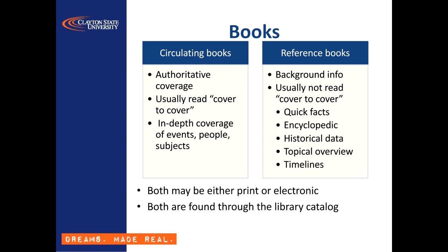Reference books, by contrast, are meant to be referred to as the name implies. You don't read it cover to cover. Instead you dip into it to pull out one particular fact or article or definition that you're looking for. Since this type of usage is generally brief and sporadic, these books are usually not checked out of the library, but left available for multiple people to use as they need them. A large part of both our circulating book and reference book collections are available electronically from the CSU library, so you can have access to them even if you're not able to come to the actual physical library.